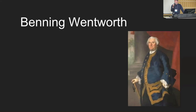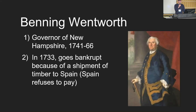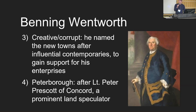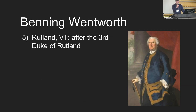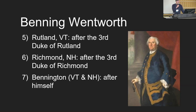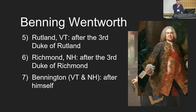Who's this? The first governor of New Hampshire, Benning Wentworth. He goes bankrupt in 1733 because of a conflict with Spain. As governor he was, let's say, creative — or maybe corrupt. He would name new towns after influential contemporaries to curry favor: Peterborough named after a prominent land speculator, Rutland after the third Duke of Rutland, Richmond after the third Duke of Richmond, and Bennington after himself.